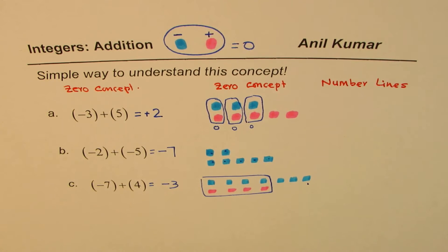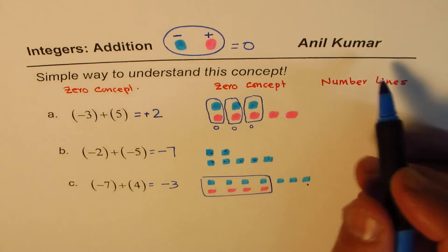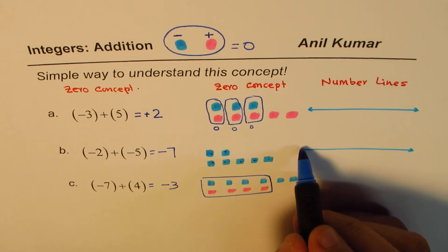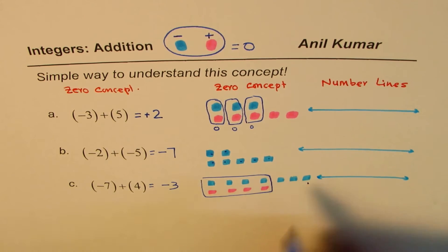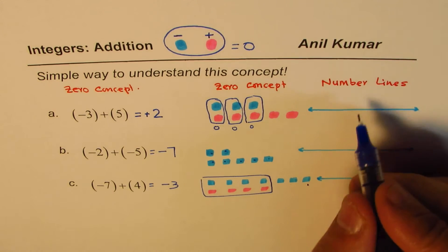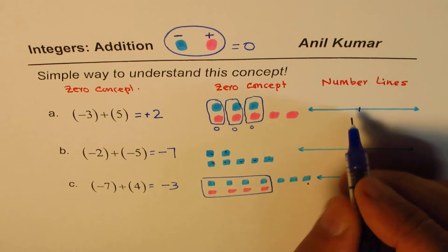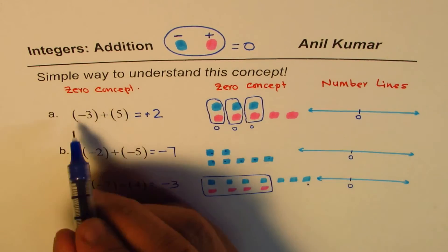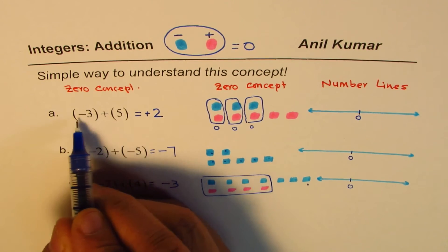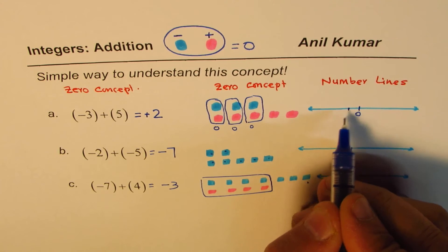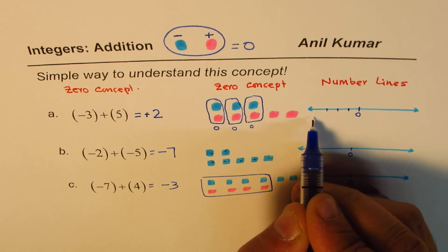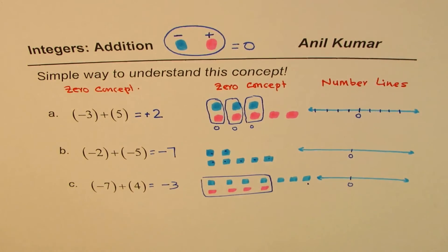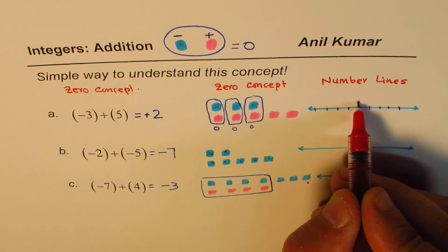Feel free to share your comments. Now let's use the number line concept. I'll draw a number line — since we have less space I'll draw a smaller one. We always begin from the center, which is zero. When I say minus three, it means we move left — minus means going left.